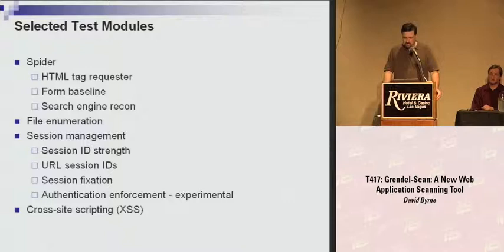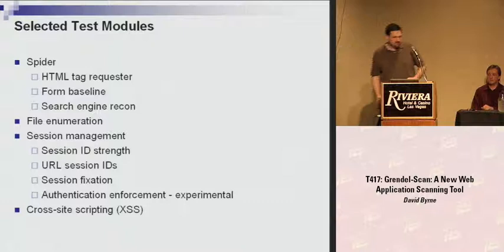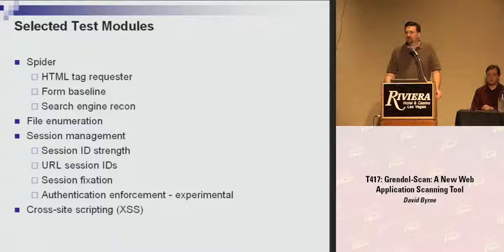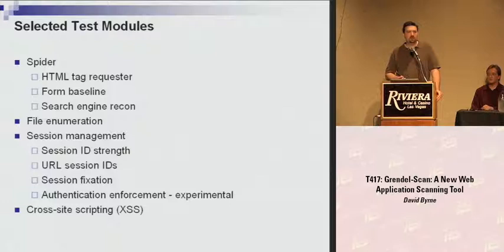There are two cross-site scripting modules — one for testing query parameters, where XSS is most commonly found, and another for testing file names. Some web platforms, WebLogic in particular, will repeat a file name verbatim inside a file-not-found message; if the file name contains JavaScript, it gets executed by the browser. Both modules use the same core technique: seeding the input with a random token, and if the token is observed in the server's response, the context is identified — whether it's an HTTP header value, an HTML tag attribute, inside an HTML comment block, and so on. Over a dozen different contexts can be identified.